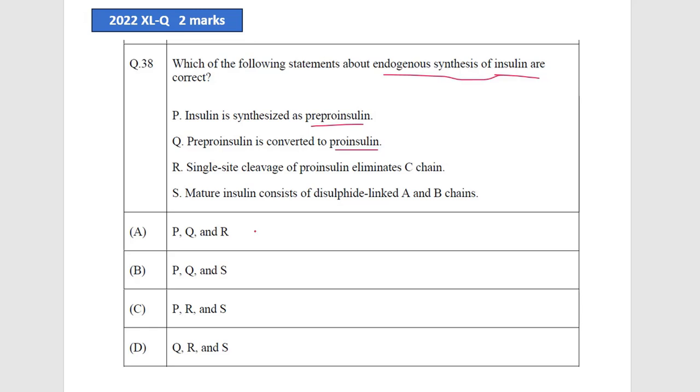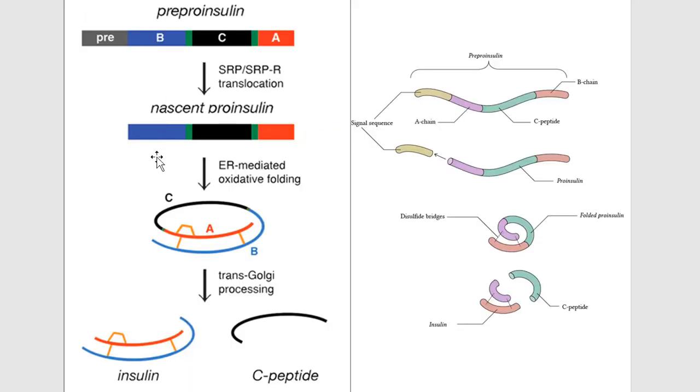We will go through how insulin is produced. Here you can see this is pre-pro-insulin. Insulin is synthesized as pre-pro-insulin, where we have a pre-chain and the three polypeptide chains: B, C, and A. This is the primary transcript that is produced after transcription of the insulin gene. This is how it looks: pre-chain pre-pro-insulin.